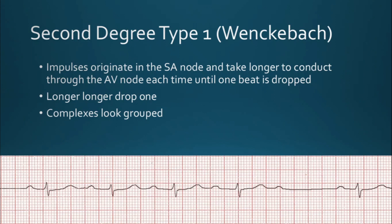Sometimes when the block is consistent, the QRS complexes are said to be group beating — you'll notice beats are grouped together, then a pause, then another group. Looking at this closely: P wave then QRS, then a prolonged PR, gets a little longer, a little longer, then a P wave with no QRS — that one was dropped. Longer, longer, longer, drop. This is your second degree type 1.